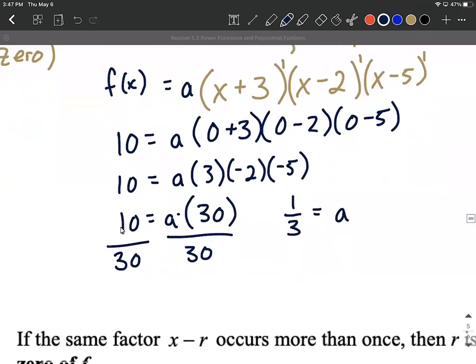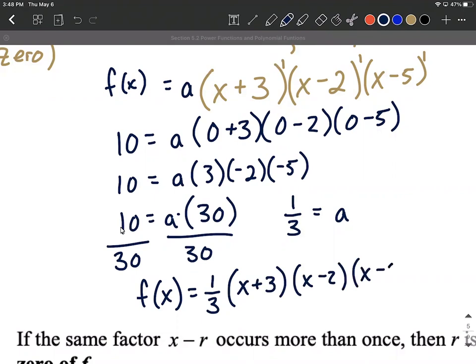Therefore the function that we're trying to go for and we're going to leave it in factored form is I'm going to plug that value for a that we just found back up in where a was in the factored form. So one-third multiplied by x plus three multiplied by x minus two multiplied by x minus five and that's a good function.